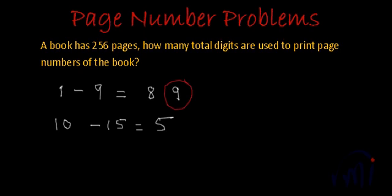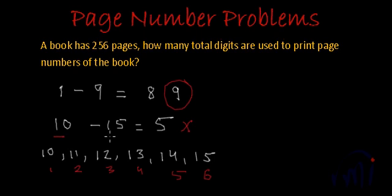If you are saying five, I have to tell you that your answer is not correct. Let us see how it works. You are reading page number 10, then 11, then 12, then 13, 14, and 15. So how many total pages are there? If you read from page number 10 to 15, you are actually reading six pages, not five.